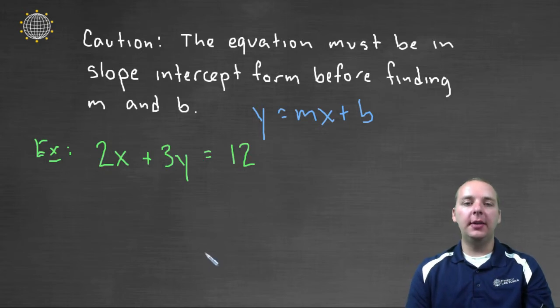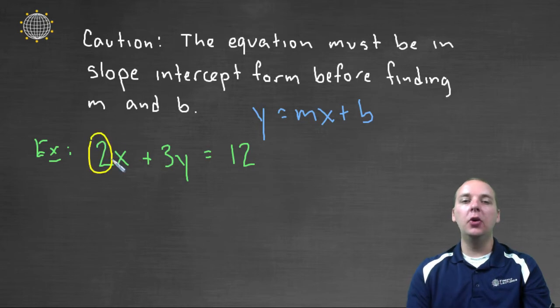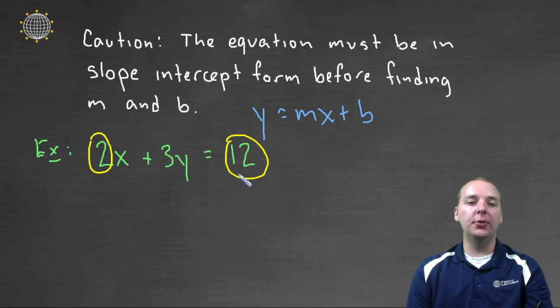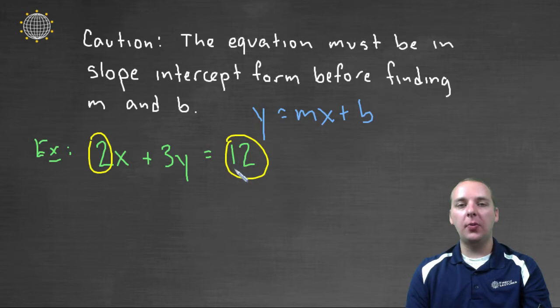It's very tempting to look at this and automatically say, oh the coefficient of x, the slope is 2 and the y-intercept is 12 or something like that. Well in fact that's not true. For this line, 2 is not the slope and 12 is not the y-intercept.